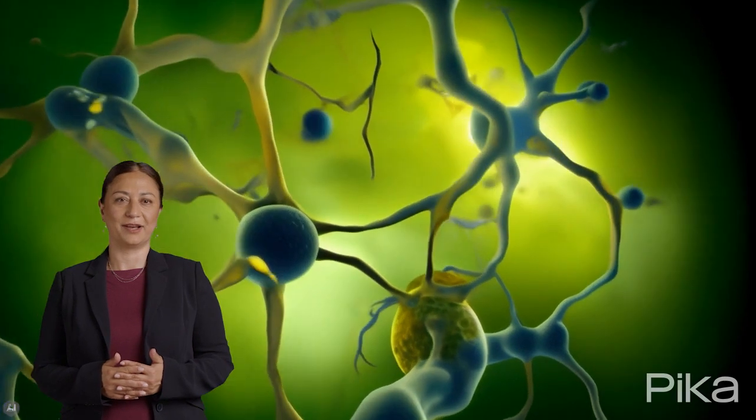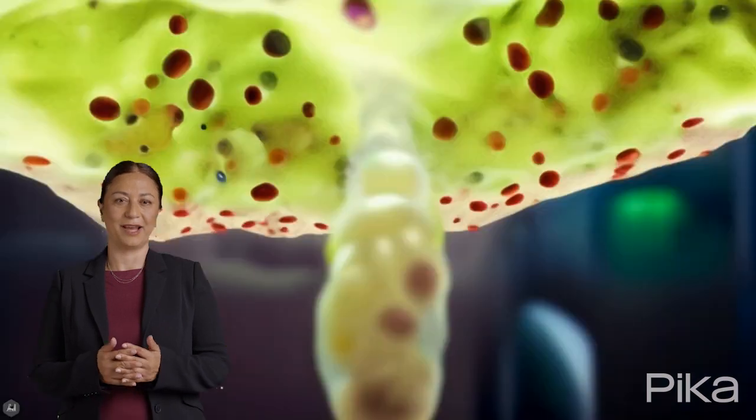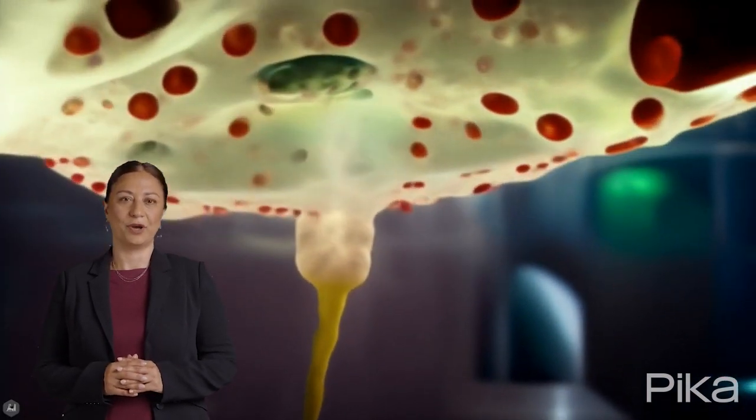The endoplasmic reticulum (ER) is another critical organelle, existing in two forms: rough ER, studded with ribosomes, and smooth ER, which lacks ribosomes.